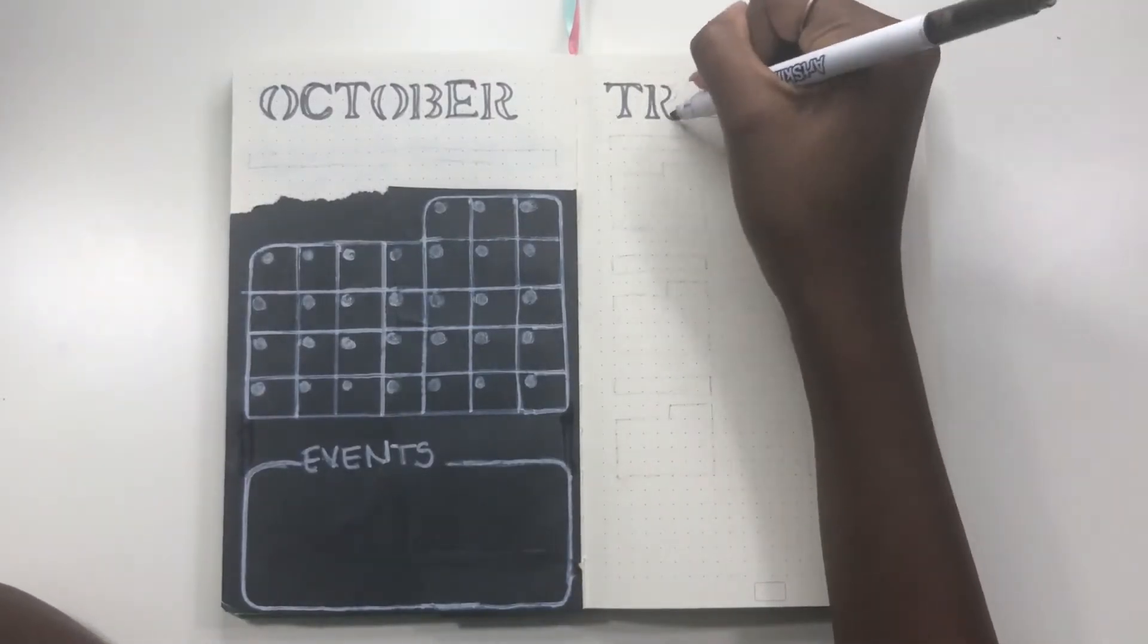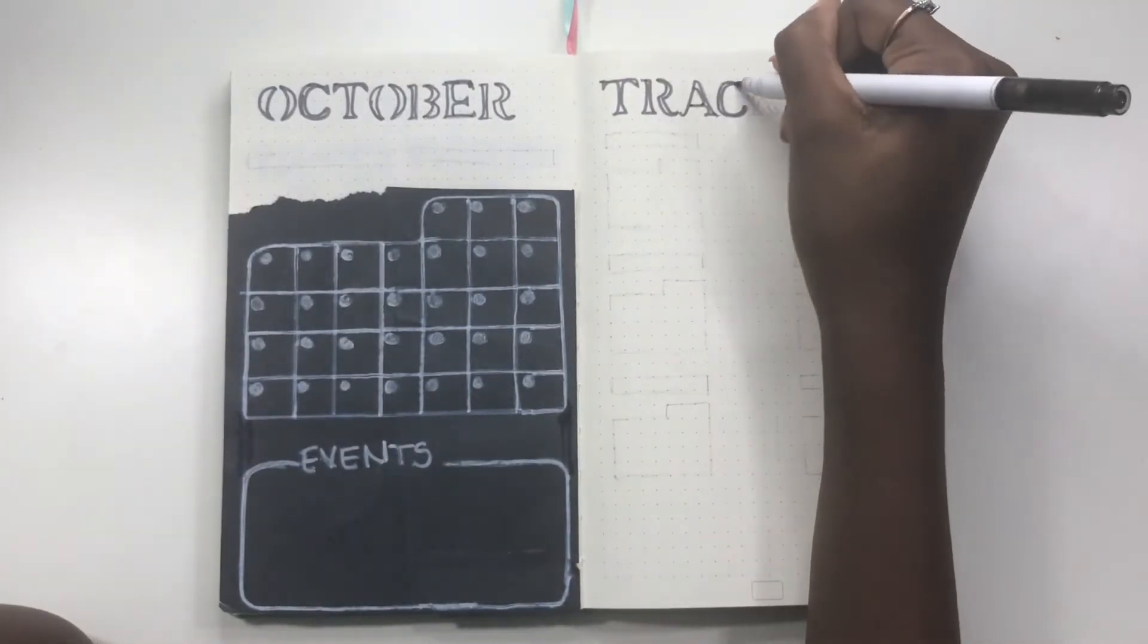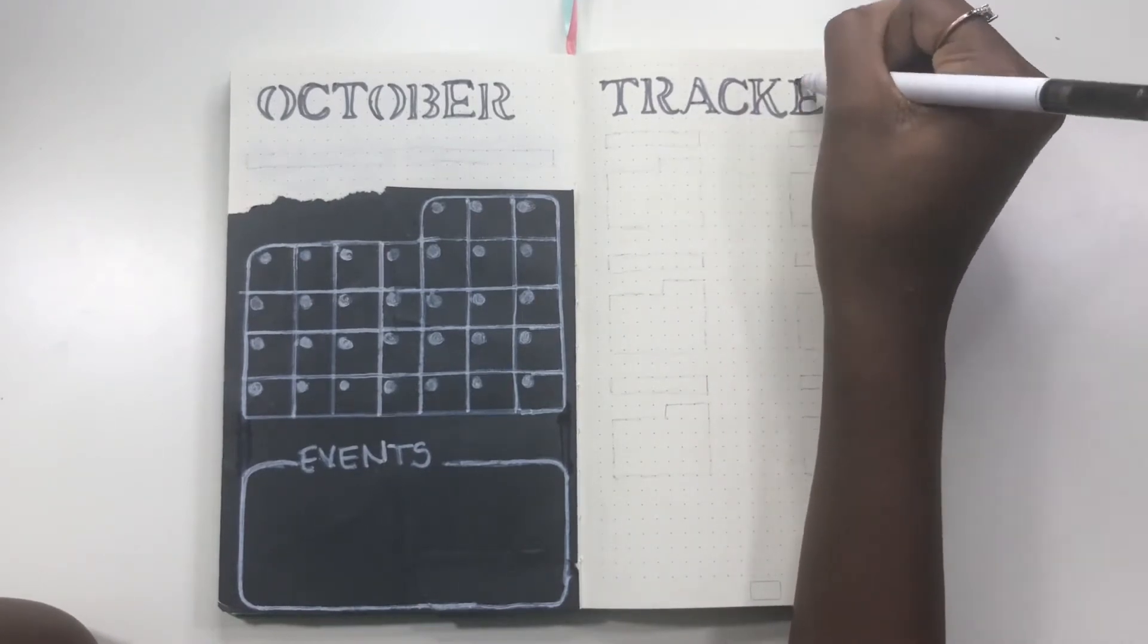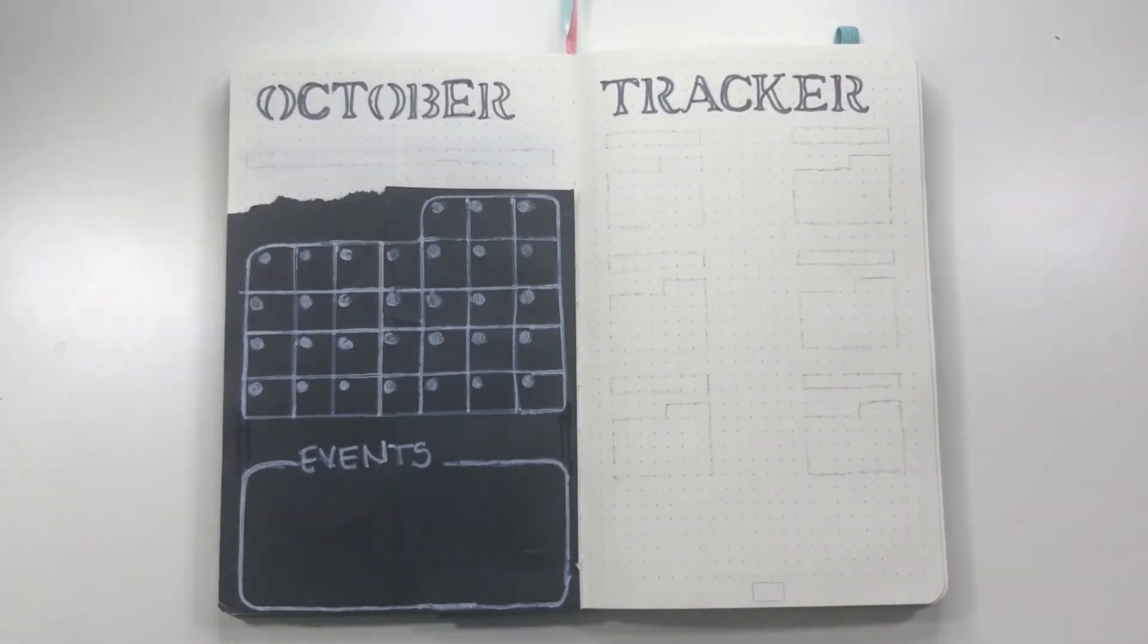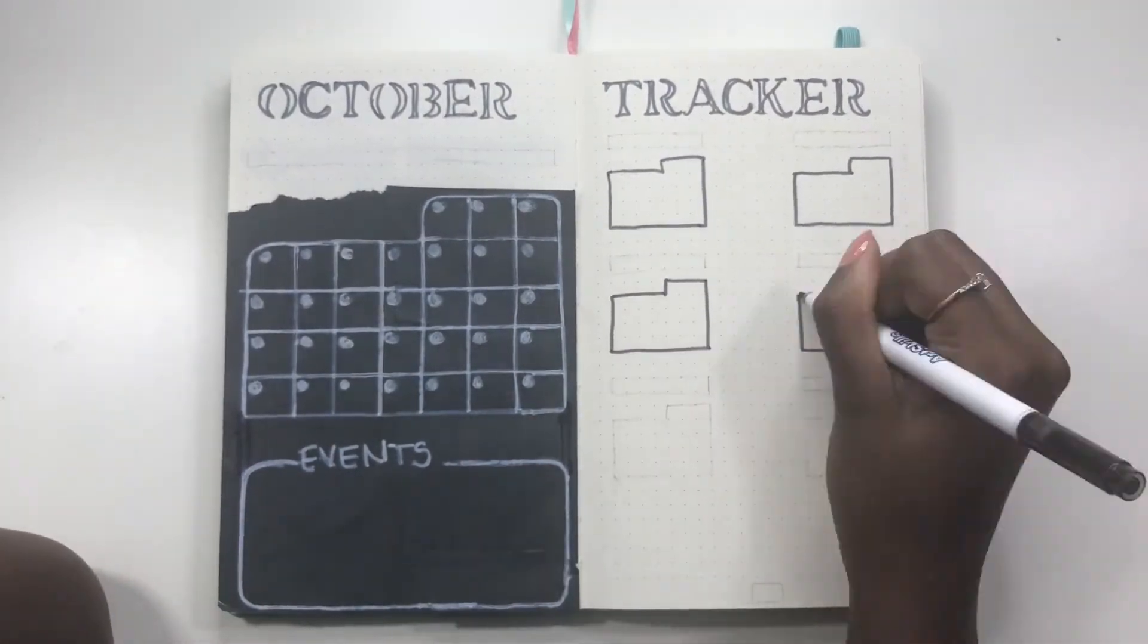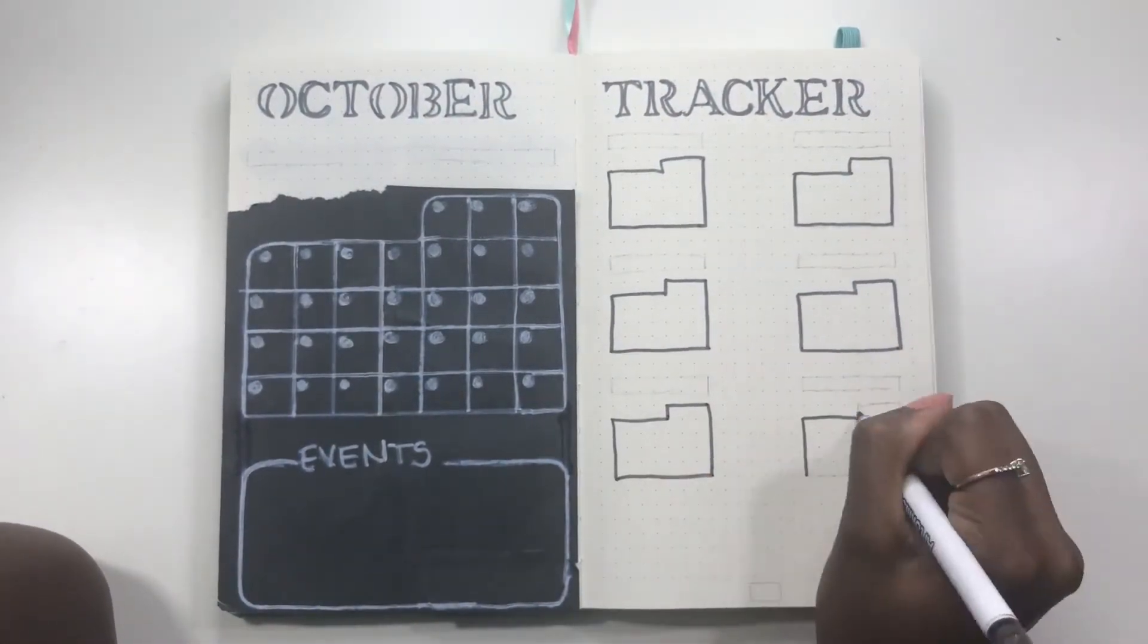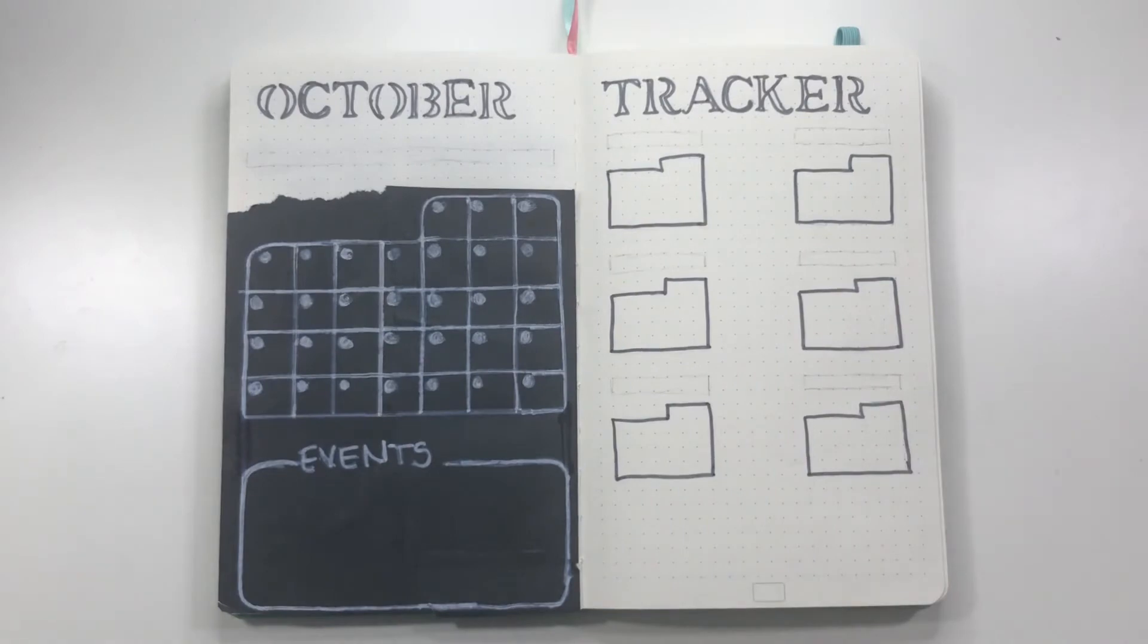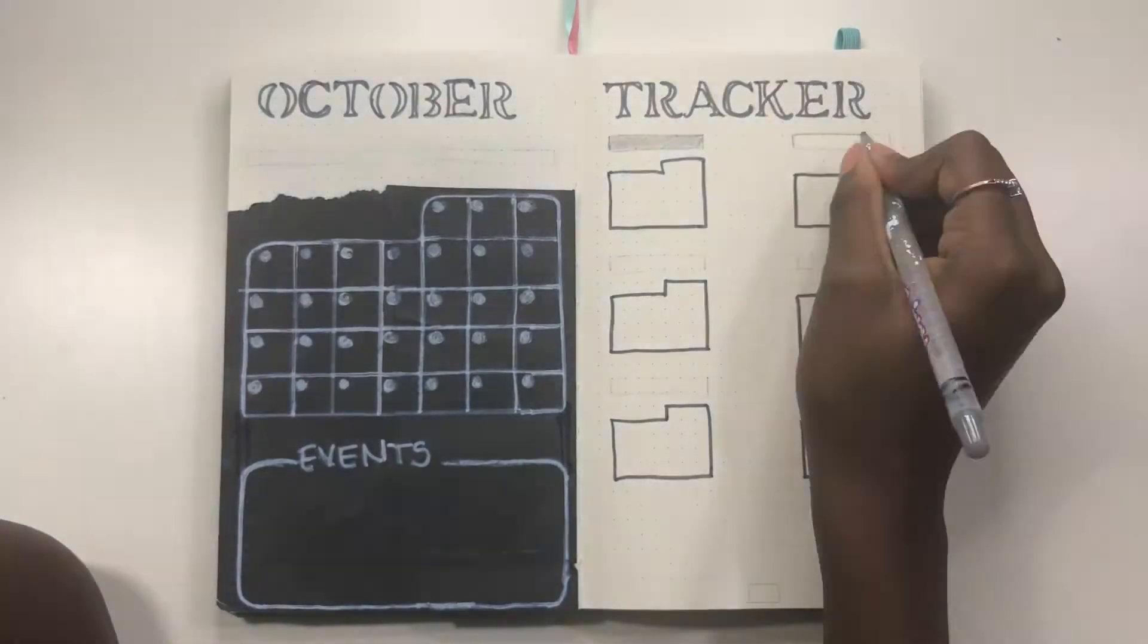Next it was time for my habit trackers. So basically I just put six little boxes and then I used one of my Crayola Twistables to write these little heading boxes.